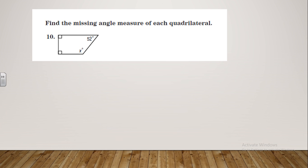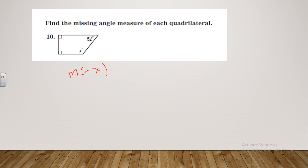Now let's look at this question. It asks you to find the missing angle measure of each quadrilateral. He gave you the measures of three angles and wants you to find the fourth. We need to use the rule that the sum of all four angles equals 360 degrees. So to find angle x, we take 360 degrees minus the three known angles.